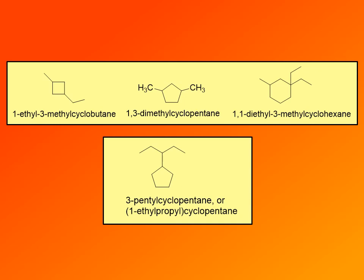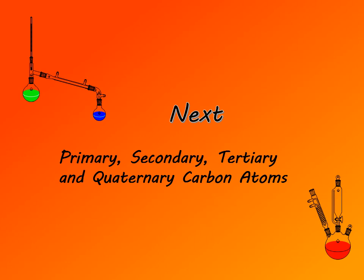Finally, when we have an open chain and a ring where both chains have the same number of carbons, the ring is considered the parent chain to break the tie. So this compound is named as cyclopentane, not pentane, giving 3-pentylcyclopentane — where 3 indicates the carbon of the pentyl group attached to cyclopentane. This is a more complex example, and strictly applying IUPAC rules, this should be named 1-ethylpropylcyclopentane. This completes nomenclature of alkanes. In the next video, we are going to examine primary, secondary, tertiary, and quaternary carbon atoms, and how those designations are used to name branched substituents.